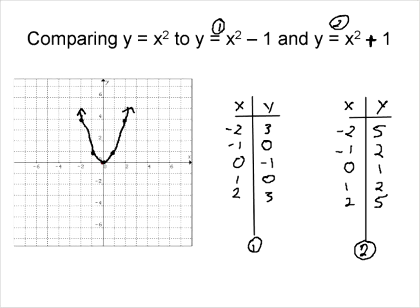We're going to now plot those two equations on the graph. For the first one I'm going to do in red here, so we go to these points: negative two three, negative one zero, zero negative one, one zero, and two three. So we have a graph that looks like that.